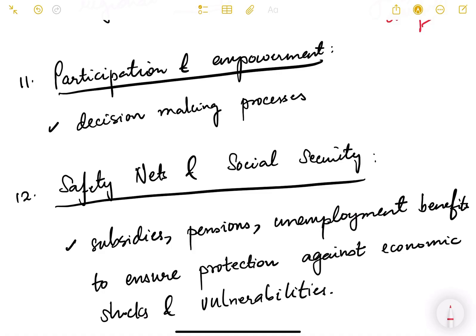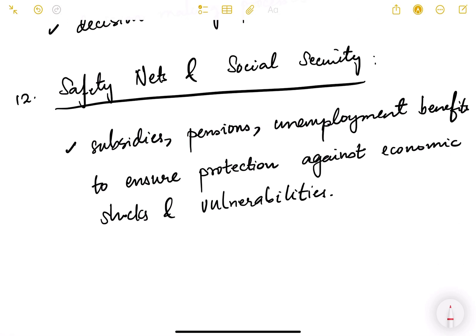Participation and empowerment in decision-making is also essential. Whether different sections of society are part of state legislatures, parliament, or panchayats, and whether they are making economic decisions for their villages, cities, or towns — all this matters. Measures like reservation for the post of Sarpanch and Chairman in municipalities, and the 33% reservation bill for parliament, help ensure participation by marginalized sections.